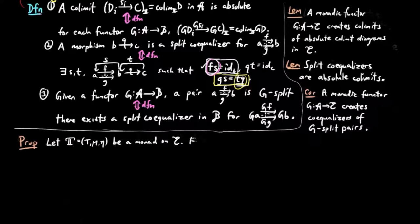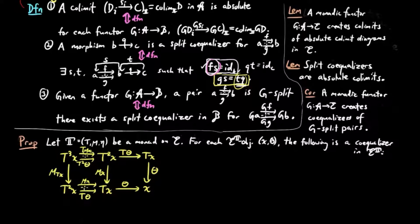Let T be a monad on E. For each Eilenberg-Moore object X theta, the following diagram is a co-equalizer in the Eilenberg-Moore category. And if we use the parentheses notation for the Eilenberg-Moore category and note that the two left vertical arrows are free objects in the Eilenberg-Moore category, we can write this as the following.